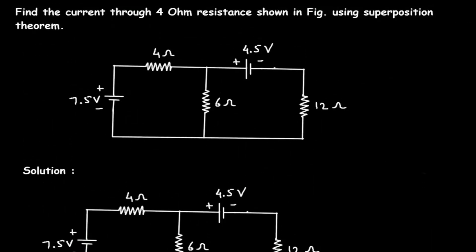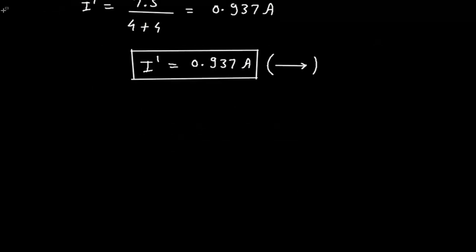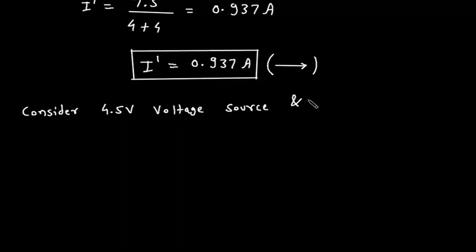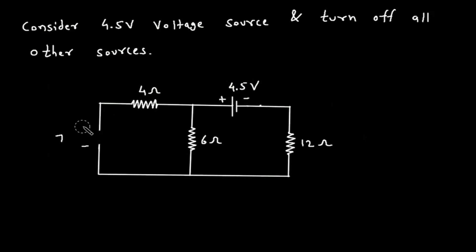Next, we have to find I double prime by considering the 4.5 volt voltage source and turning off all other sources. So if we turn off the 7.5 volt voltage source, this will be a short circuit. According to the polarity of this voltage source, this will be the total current and this will be I double prime.